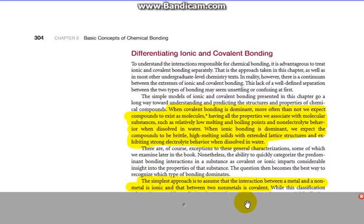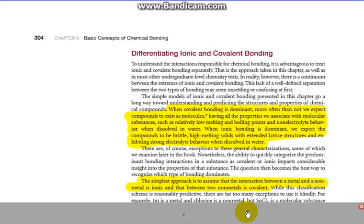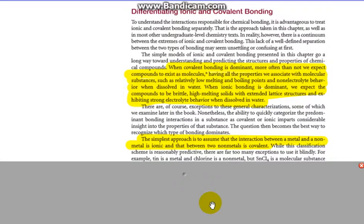The ability to quickly categorize the predominant bonding interactions in a substance as covalent or ionic imparts considerable insight into the properties of that substance. The question becomes the best way to do this, which one dominates. The simplest approach is to assume that interactions between a metal and non-metal is likely ionic, and the interaction between non-metals is covalent, as we've talked about all the way back from grade 10.